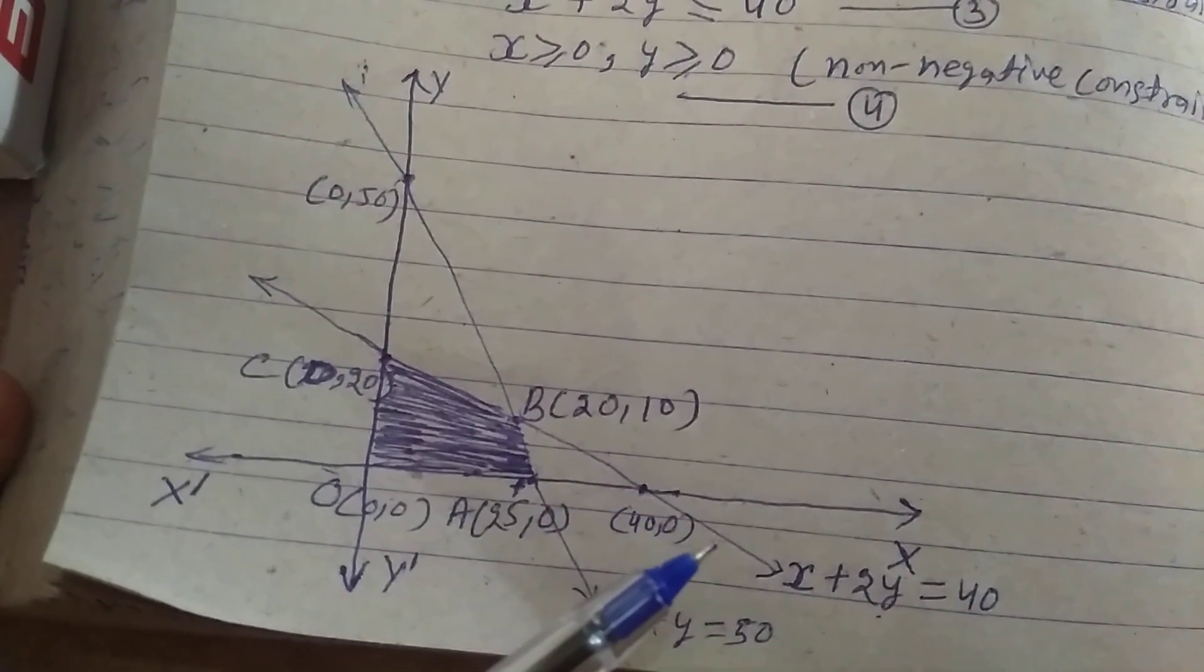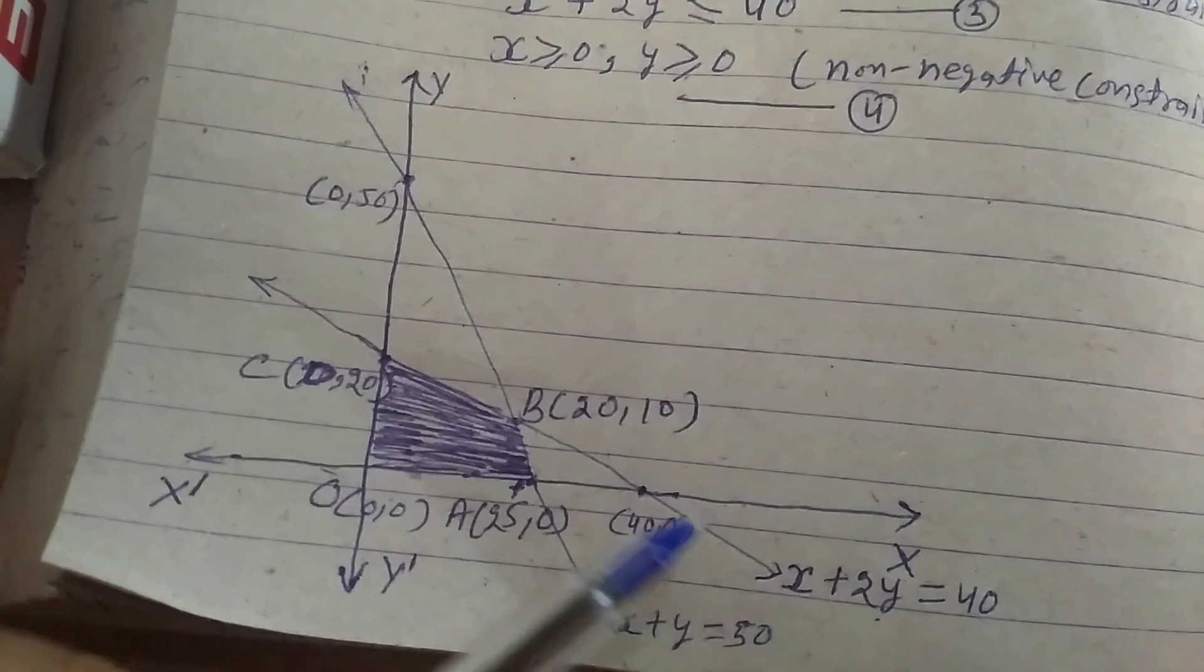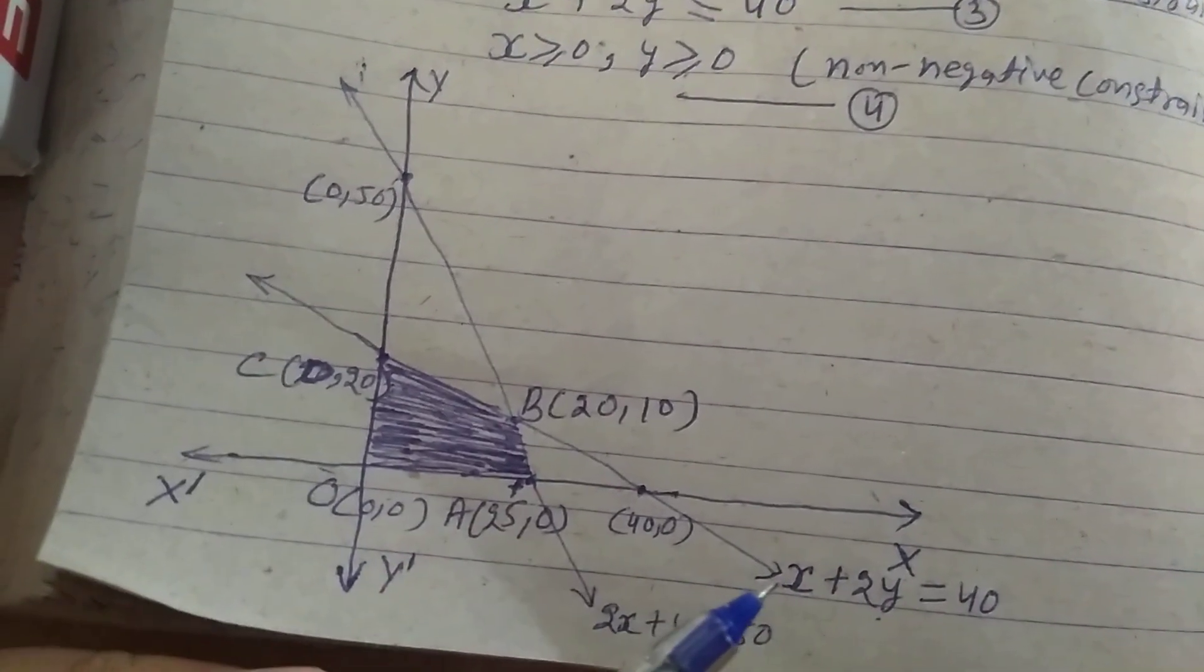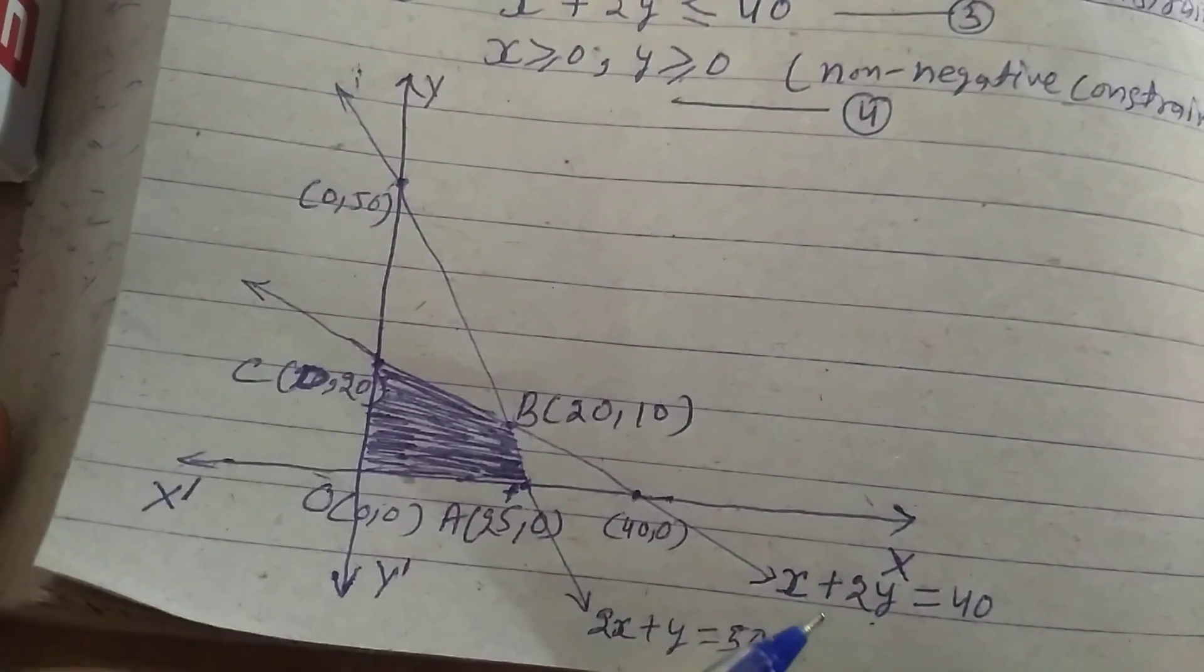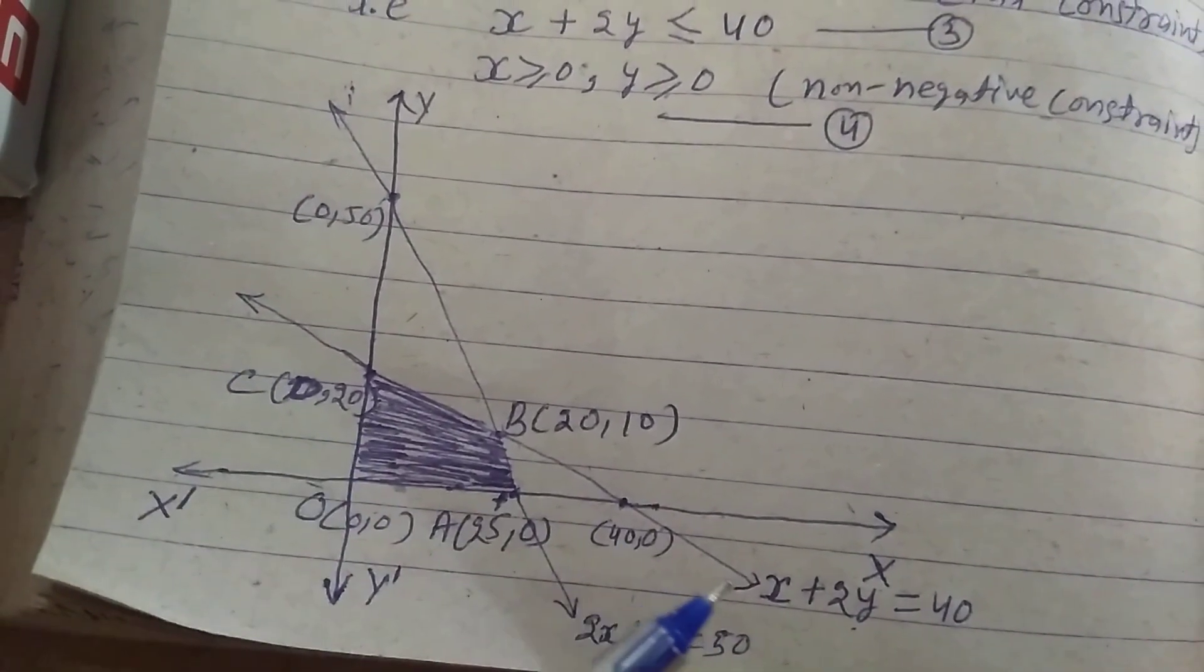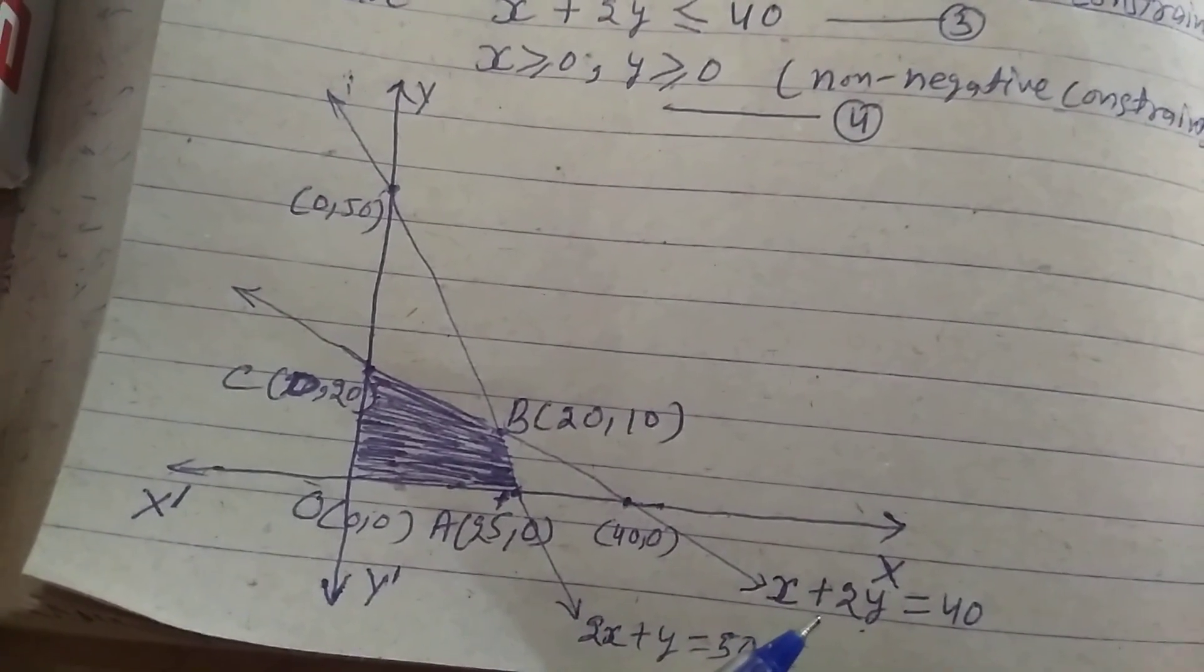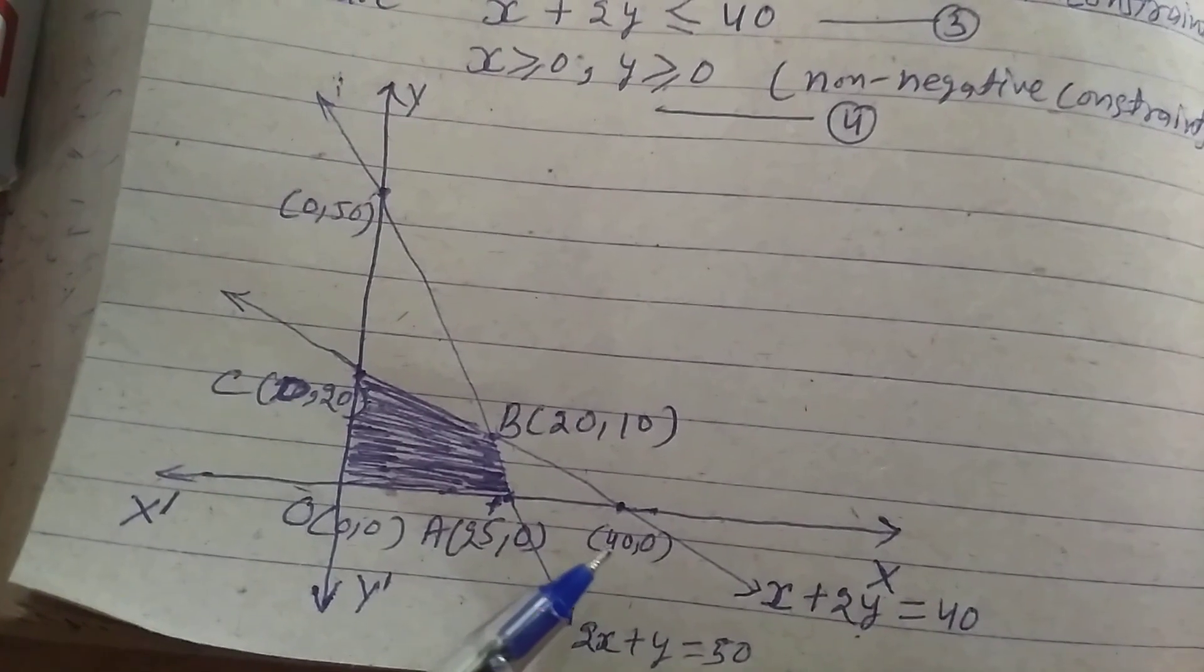And second, third constraint: x plus 2y is equal to 40. Draw this line. When x is equal to 0, y is equal to 20, so point C is (0, 20). And when y is equal to 0, x is equal to 40, so this point is (40, 0).